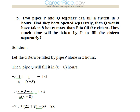Fifth question: two pipes P and Q together can fill a system in 3 hours. Had they been operated separately, Q would have taken 8 hours more than P to fill the system. How much time will be taken by P to fill the system separately? We don't know the time taken by P, so we assume P's time to be x hours. Pipe Q's time would be x plus 8. So 1/x plus 1/(x+8) equals 1/3.